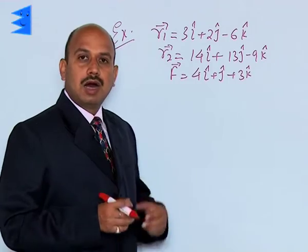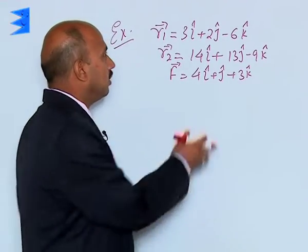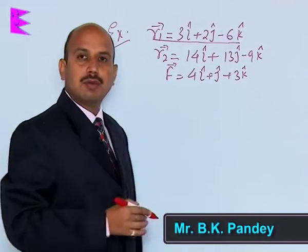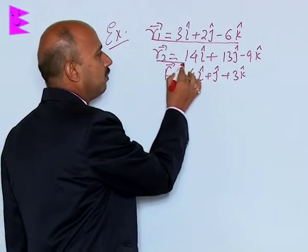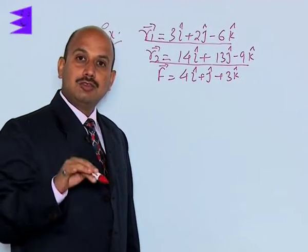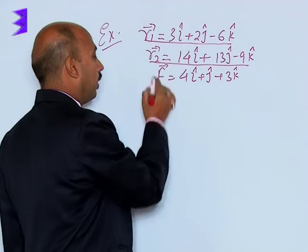Now, see in this example. I have taken two positions of the particle. R1 = 3i + 2j - 6k, R2 = 14i + 13j - 9k. It means a particle is moving from position R1 to R2.